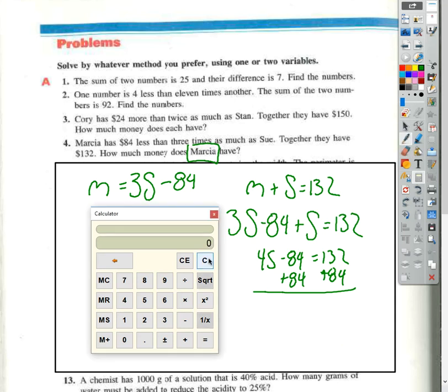Laugh it up. So we have 132 plus 84, and I get 216 because I was getting an answer, it just did not seem right to me whatsoever. And so then we have 4S divided by 4, and I get 54. Now that's starting to look a little bit better. So Sue has $54.